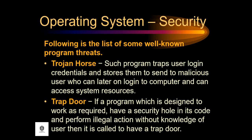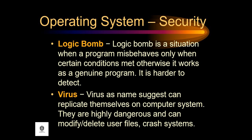A Trojan horse is a program that chops user login credentials and stores them to send to a malicious user, who can later log into the computer and access system resources. A trapdoor is when a program designed to work as required has a security hole in its code and performs illegal actions without the knowledge of the user. A logic bomb is a situation when a program misbehaves only when certain conditions are met; otherwise it works as a genuine program and is harder to detect.